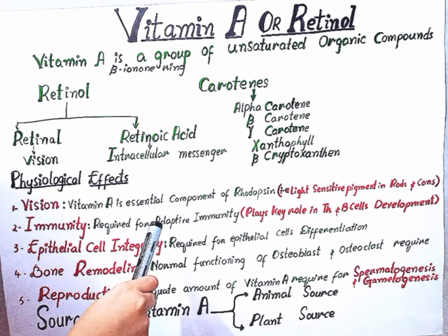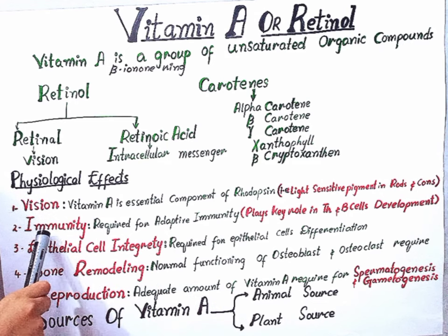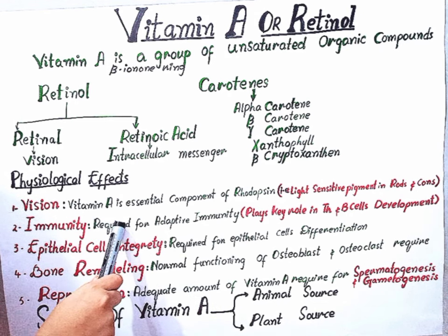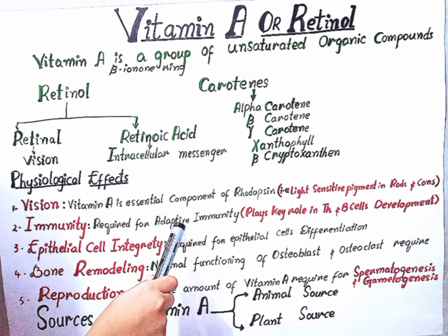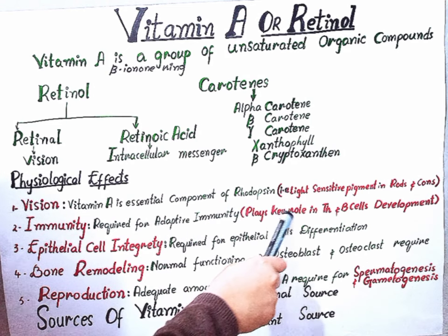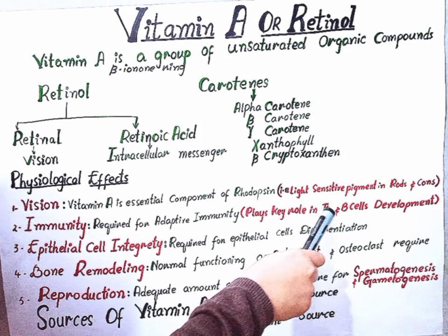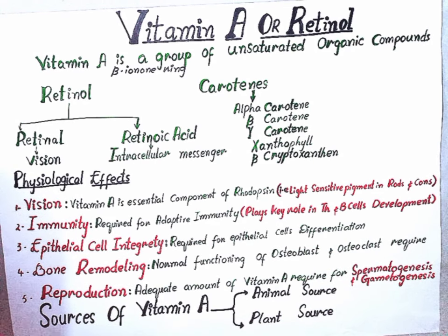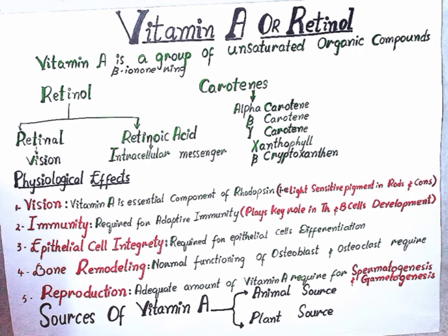Next, Vitamin A is required for adaptive immunity. It plays a key role in T cell and B cell development. Vitamin A is usually called the anti-inflammatory vitamin because it plays a key role in the development of our immune system.